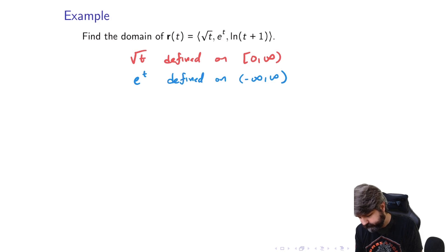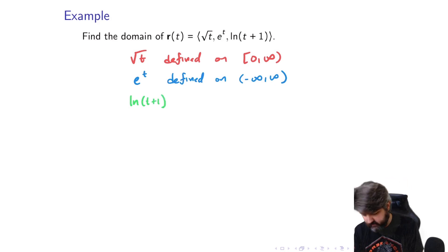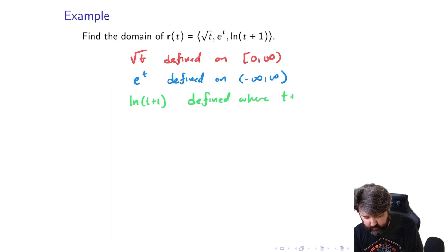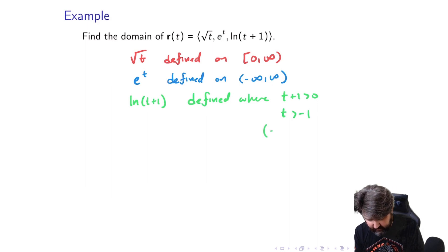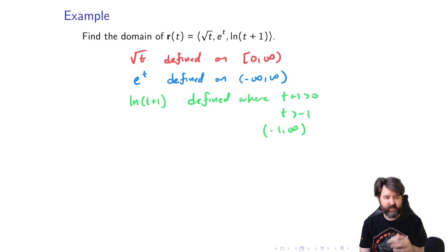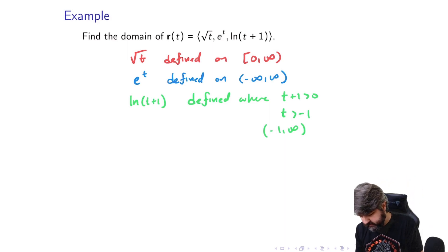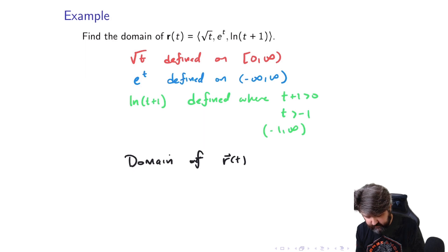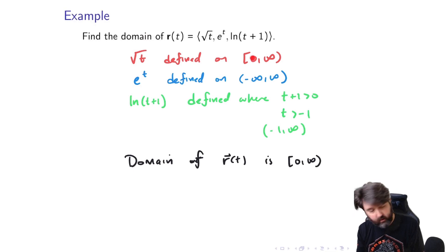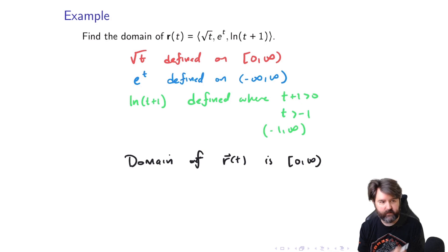For the last component, natural log of (T plus one): remember, the argument for the natural logarithm has to be positive, so it's defined where T plus one is positive, meaning T has to be bigger than negative one — that's negative one to infinity. So the domain of R of T is the closed interval from zero to infinity, since that is a subset of both of the other domains.